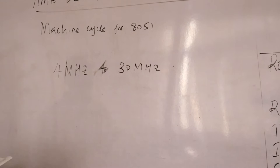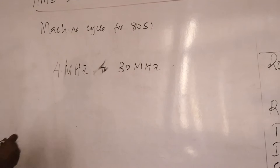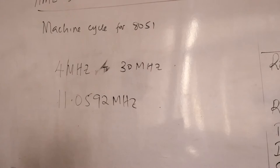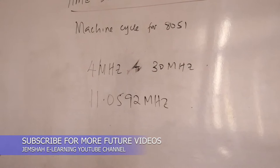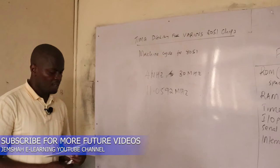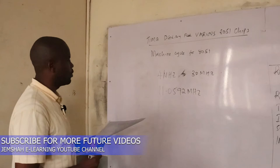In most cases, the frequency that is often used is 11.0592 MHz. This is done in order to make the 8051 system compatible with the serial port of the IBM PC. In the original 8051, one machine cycle lasts for 12 oscillator periods.